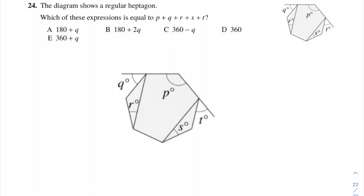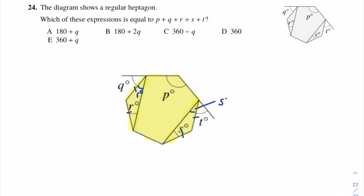Question 24: the diagram shows a regular heptagon. Which expression equals p + q + r + s + t? The heptagon is made up of a five-sided polygon and two smaller isosceles triangles. The side lengths of the triangles equal the sides of the heptagon, so the base angles of each isosceles triangle duplicate: one triangle has two angles of r, the other has two angles of s.